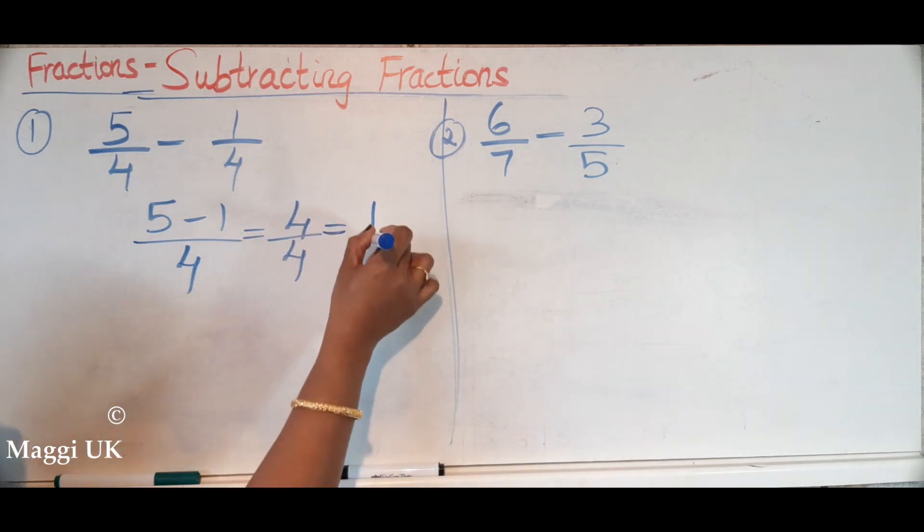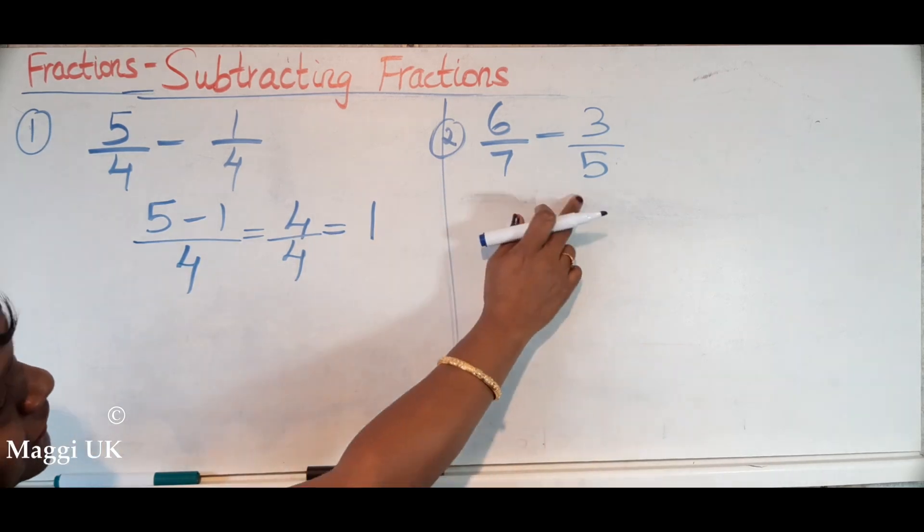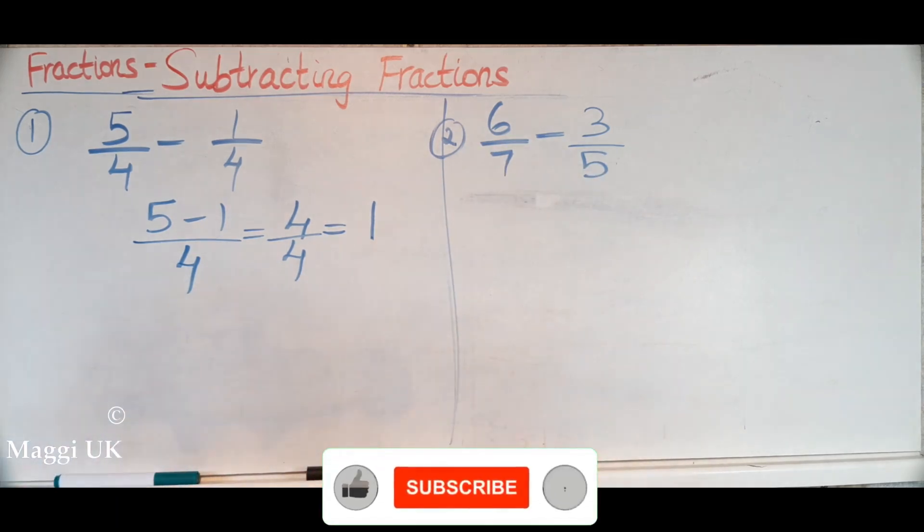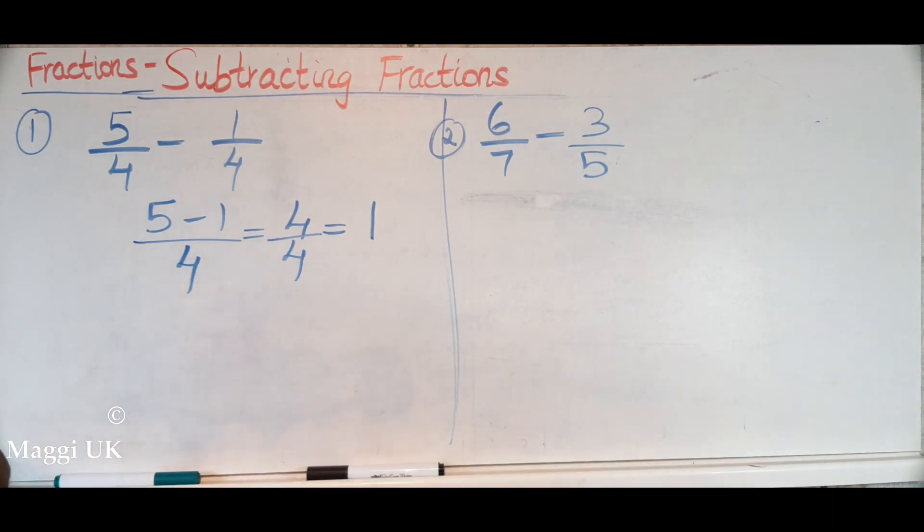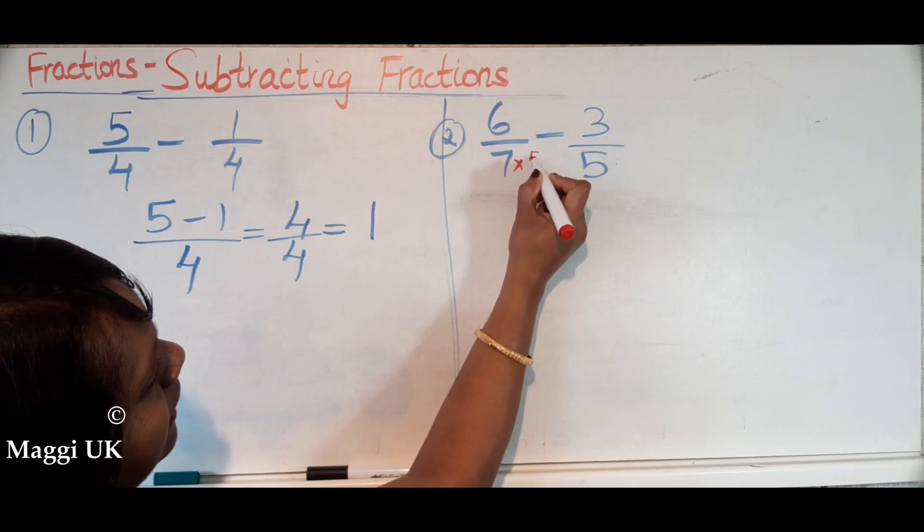Next one, Stanley, you want to give the answer for this? Yes. If you see here, 6/7 take away 3/5, we need to find the common denominator. What do you think the common denominator will be? What is the common denominator? Thirty-five. Thirty-five, okay good. So that means we need to times by 5.